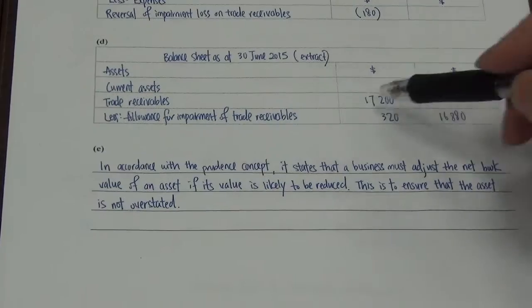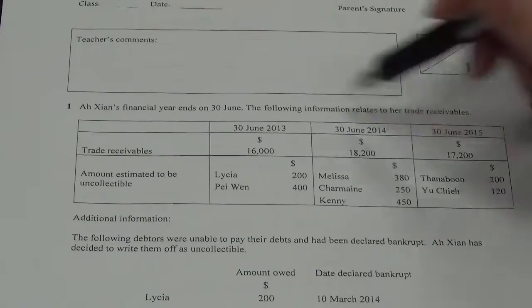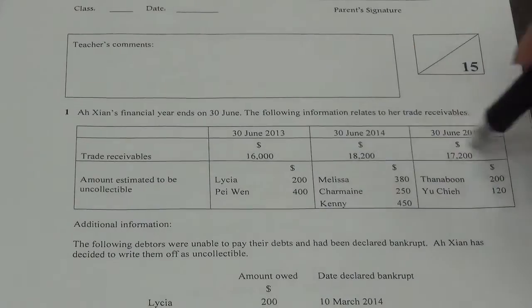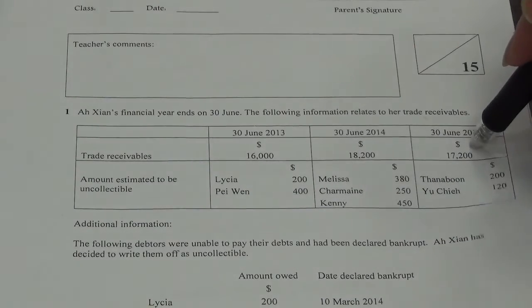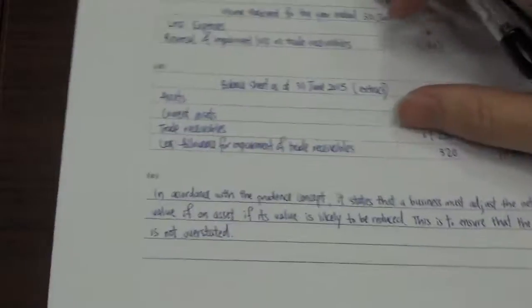Then after that, you go to your balance sheet, write an extract. Trade receivable is 17200. Take from where? Take from here. This trade receivable is used only for balance sheet extract. It's not used for allowance account. It's not used for impairment loss account. It's only used for balance sheet extract.